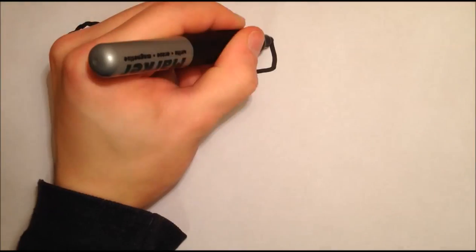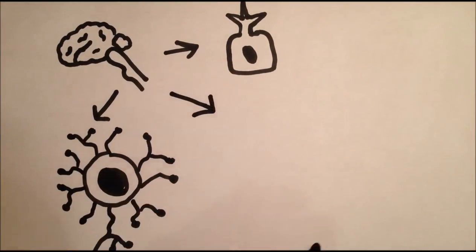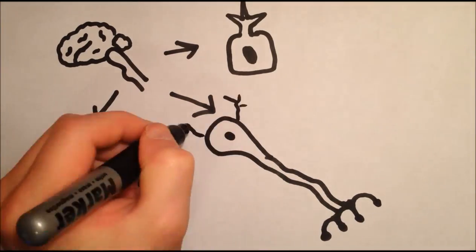The brain is made up of many different cells, but the most important of these is the nerve cell. This is because nerve cells are responsible for the processing of information.